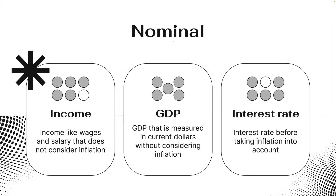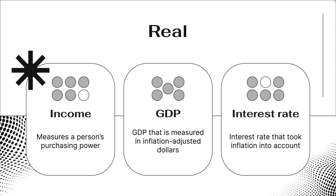The second topic is nominal versus real. Nominal refers to variables that have not been adjusted for inflation — for example, nominal income like wages and salary, nominal GDP measured in current dollars, and the nominal interest rate before accounting for inflation. Real refers to variables adjusted for inflation: real income measures purchasing power, real GDP is measured in inflation-adjusted dollars, and real interest rates take inflation into account.